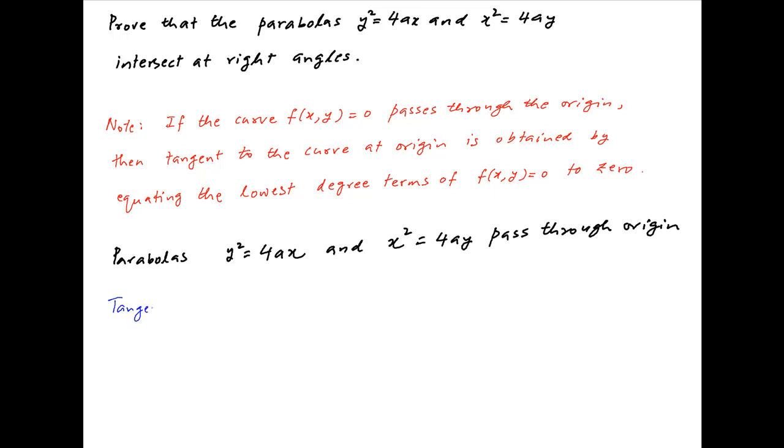Therefore, the equation of the tangent at the origin to y squared equals 4ax is obtained by equating the lowest degree term 4ax to 0, or in other words, the tangent is x equals 0.